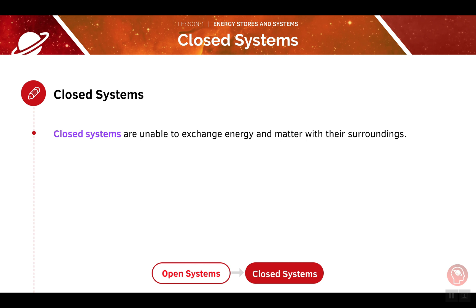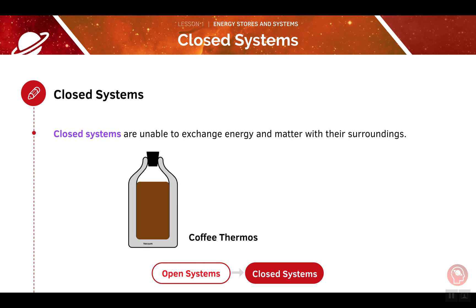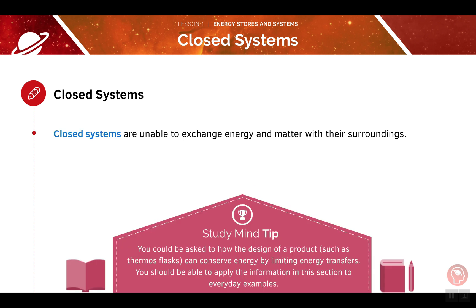Next, we'll be looking at closed systems. Closed systems are the opposite to open systems — they are unable to exchange energy and matter with their surroundings. We'll use the example of a thermos flask. When we pour coffee into an insulated flask and close the lid, heat energy is unable to leave the system. By doing this, we've created a closed system in which energy cannot be transferred. Exam questions will often ask you to apply your knowledge, so it's important that you can apply these basic principles to a variety of different situations.